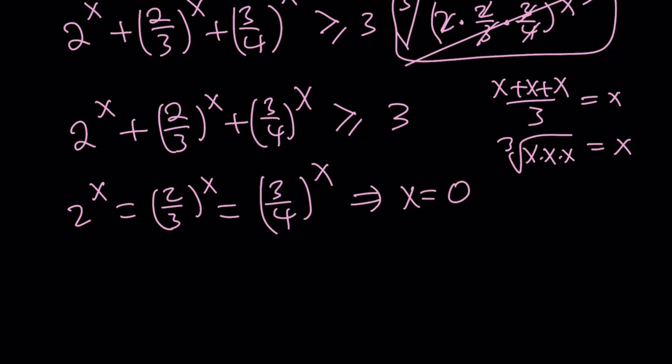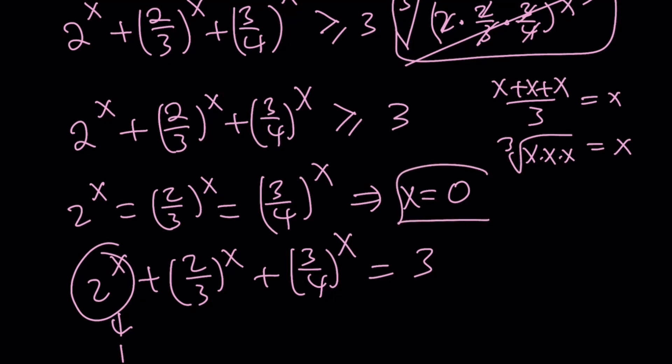You can also approach it this way. Remember our original equation, and we said that each term has to be the same, and their sum is equal to 3. So each of these must be 1, which implies again that x equals 0. Make sense?